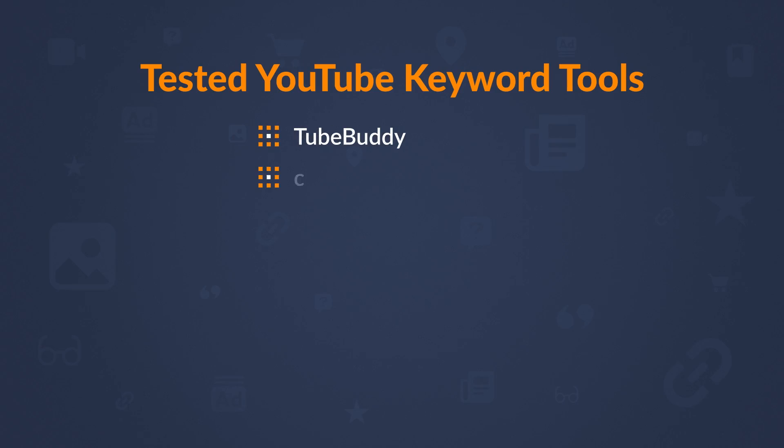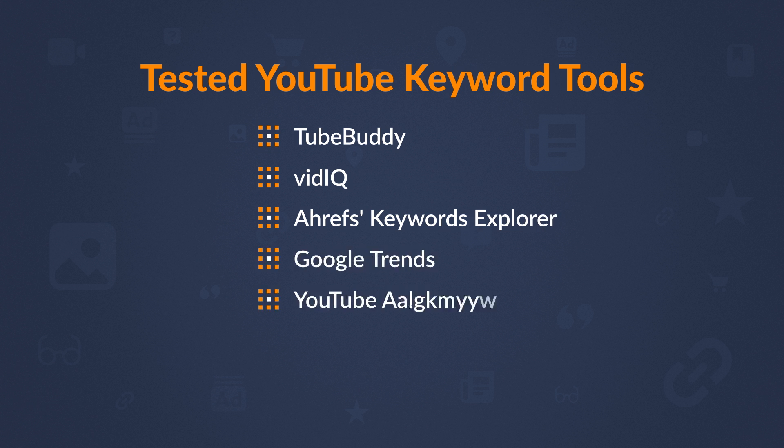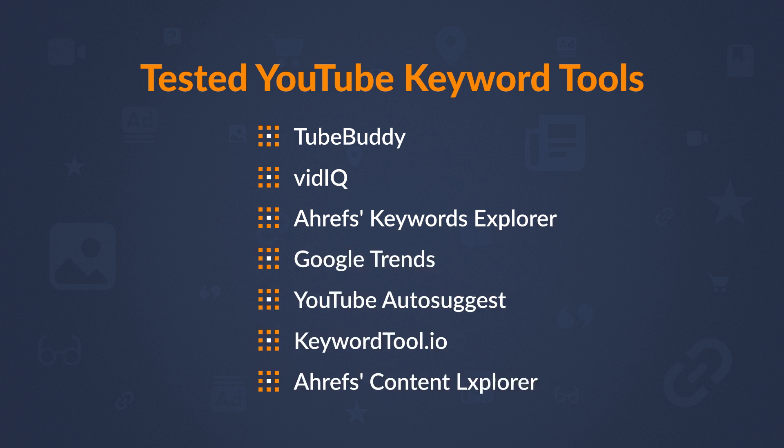TubeBuddy, VidIQ, Ahrefs Keywords Explorer, Google Trends, YouTube AutoSuggest, KeywordTool.io, and Ahrefs Content Explorer. Rather than filling up our time together talking about each of these tools, I'm going to focus on the 4 that I still use, making them the best keyword tools for YouTube, in my opinion. Let's talk about the tools and some actionable use cases.